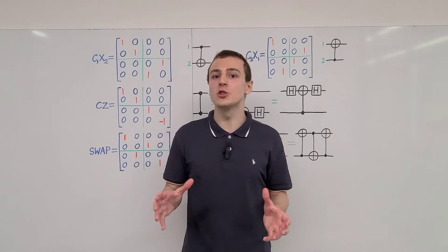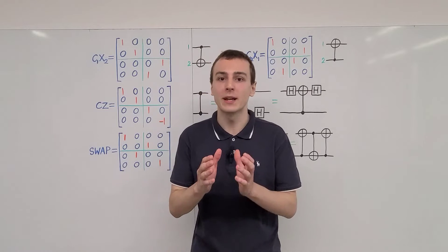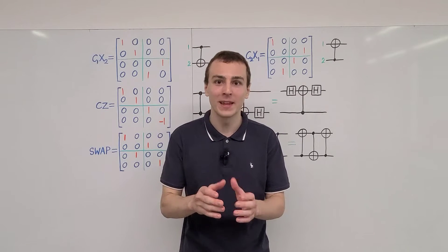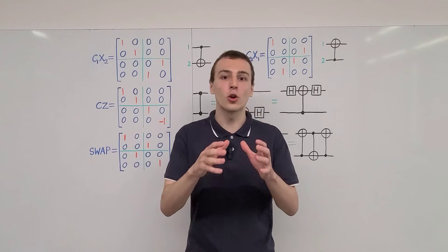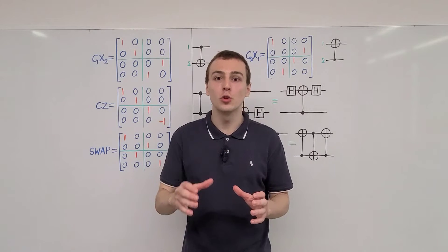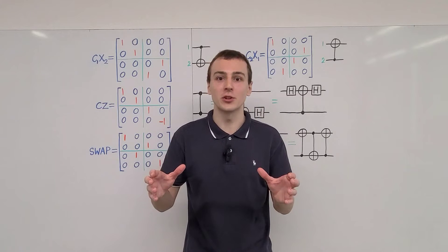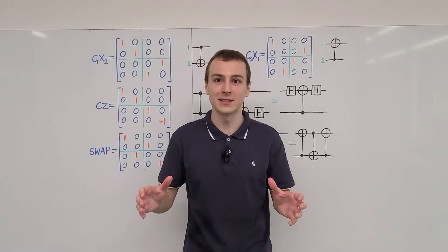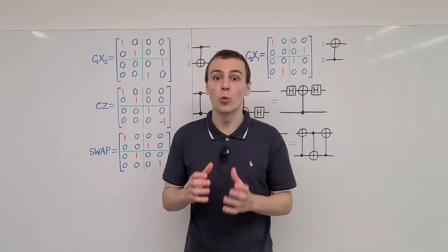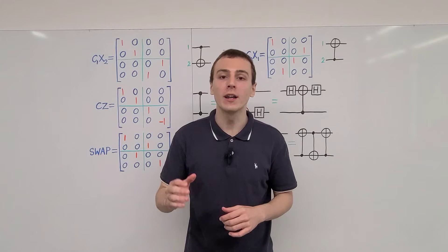Any time you want to construct a matrix representation of an operator in quantum mechanics, you have to choose a particular basis. In this video, I'm using the computational basis for a two-qubit system. We have four basis vectors that form an orthonormal basis, denoted as 00, 01, 10, and 11.